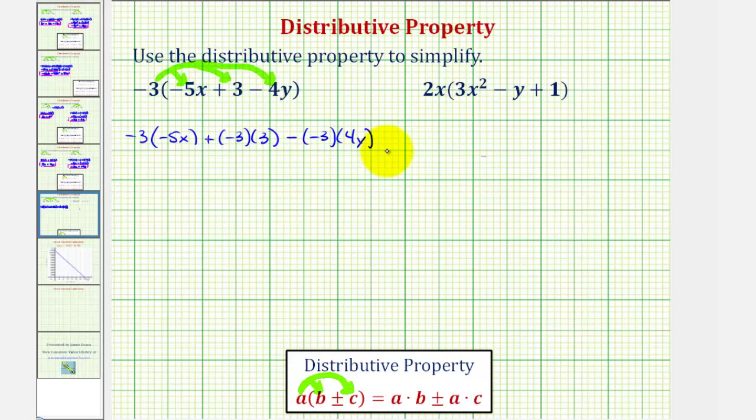Now we'll find each product. Negative three times negative five x is positive 15x, plus negative three times positive three is negative nine, and then minus negative three times four y is negative 12y.